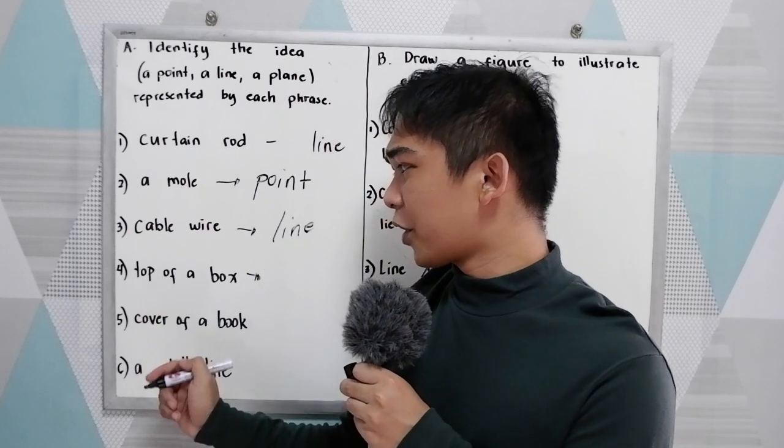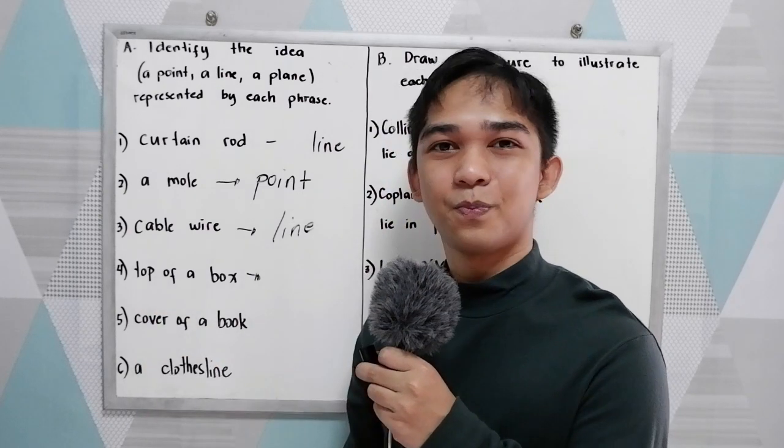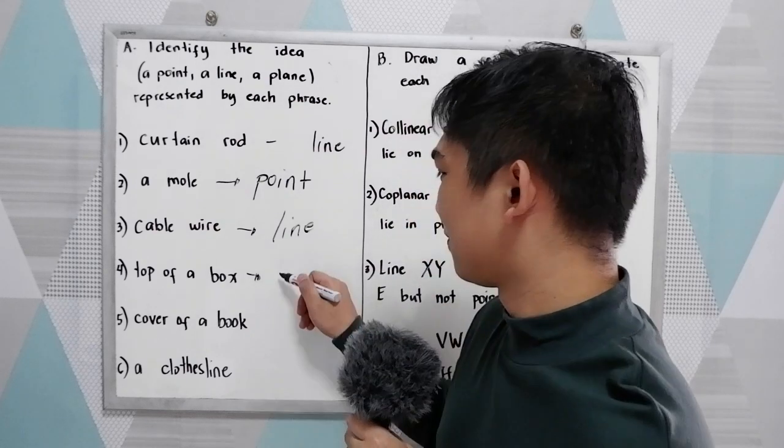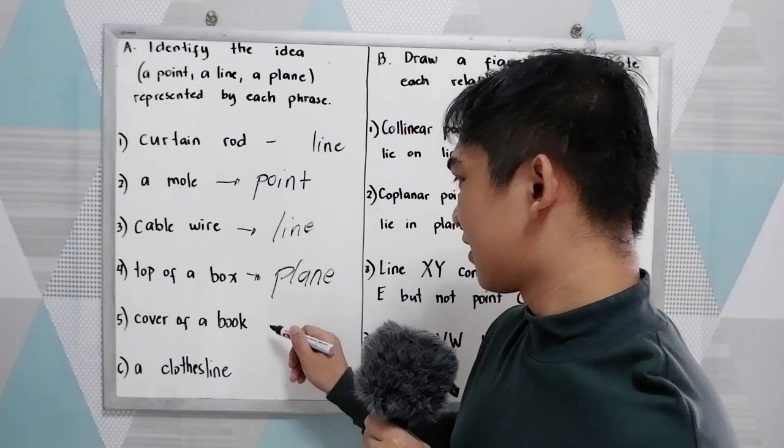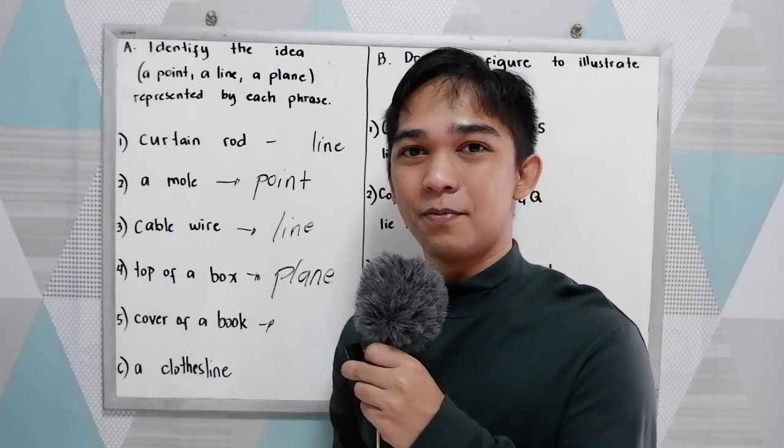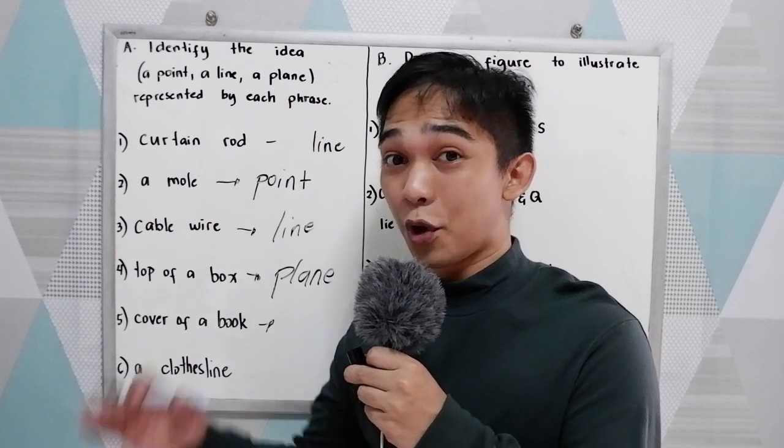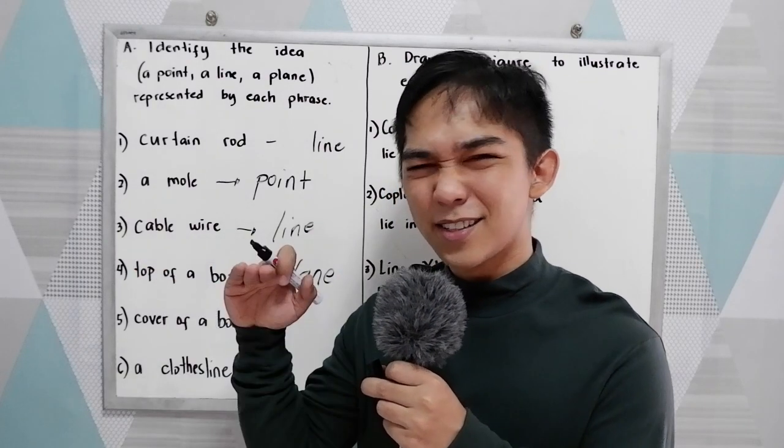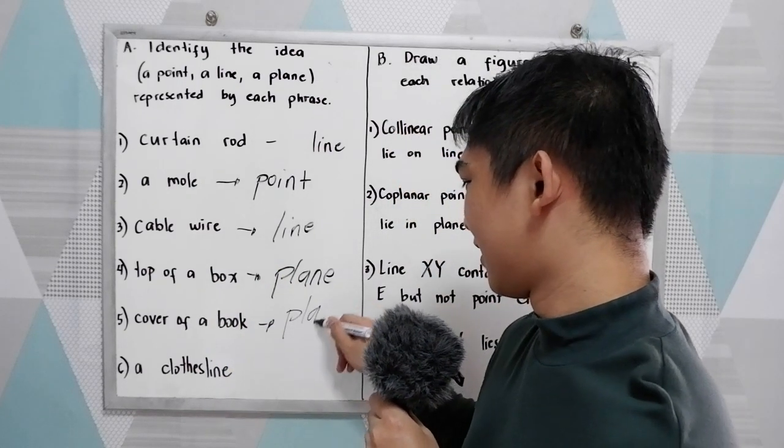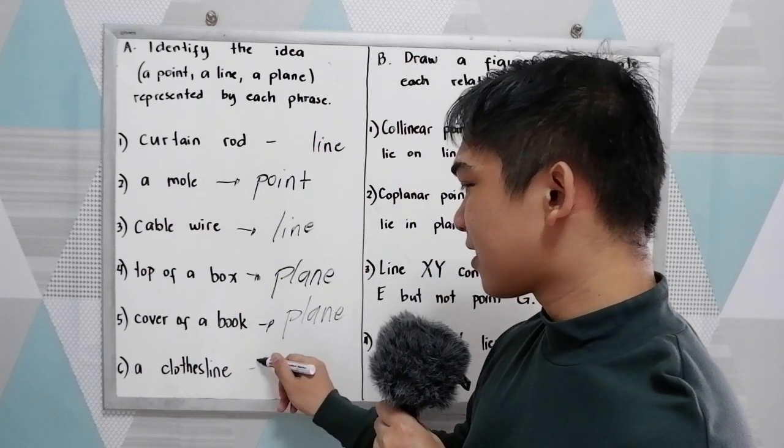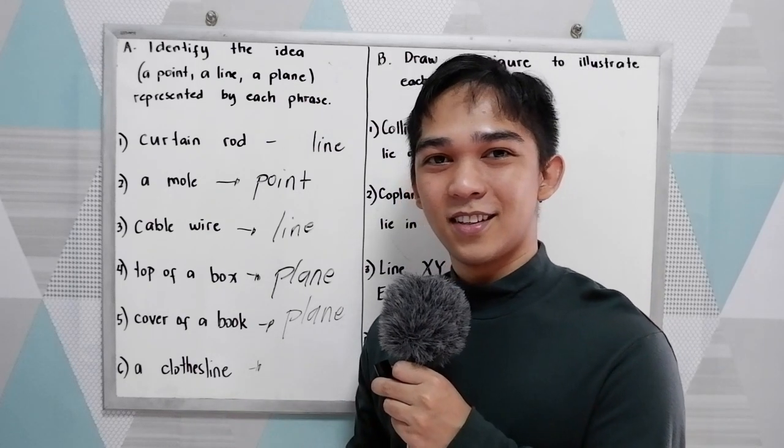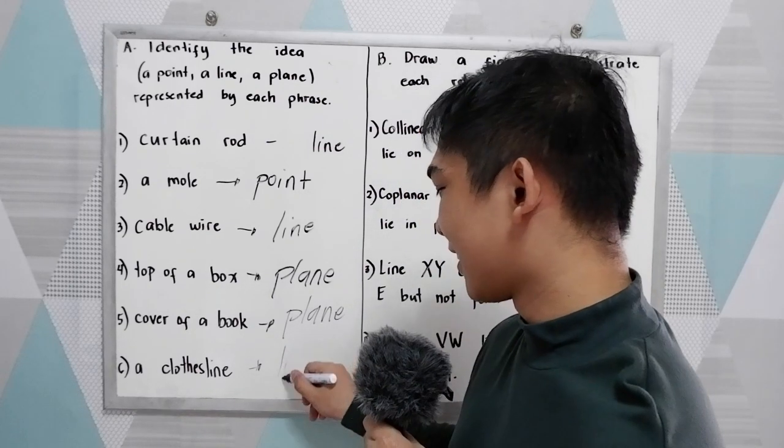How about number four, top of a box. Yes, it is a plane. Number five, cover of a book. About the cover, is it a plane? And last, a clothesline. Yes, it is a line, of course.